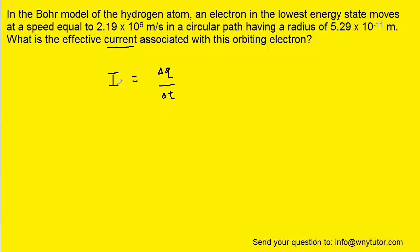So we have the current represented by the letter I. Delta Q is the amount of charge that passes a given point, and delta T is the time required for the charge to pass that point.